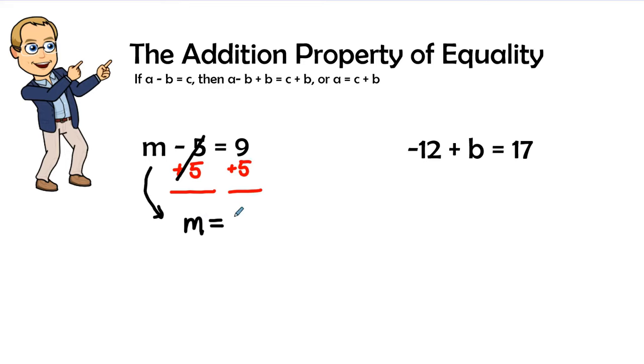And then nine plus five is fourteen. That is just a simple one-step property, addition property of equality. This is also known as a one-step equation. So let's go ahead into the second problem.